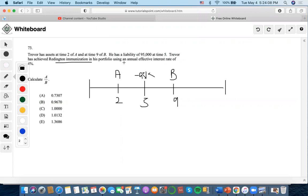Trevor has achieved and is using an effective calculator A over B. Well, the first rule is that we want the present values equal to each other, right? So let's do PV of A equals, well now since the present values of both assets and liabilities have to equal each other, let's just find the present value of the liability occurring at time 5. So we're going to do 95,000 divided by 1.04 to the 5, so we're going to get 78,083.